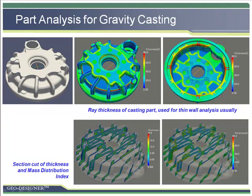GeoDesigner can provide detail part information for gravity casting parts, such as mass, volume, surface area, projected area in different directions, and also the casting modulus. The wall thickness can be displayed in 3D contour, section, or multi-sections method.